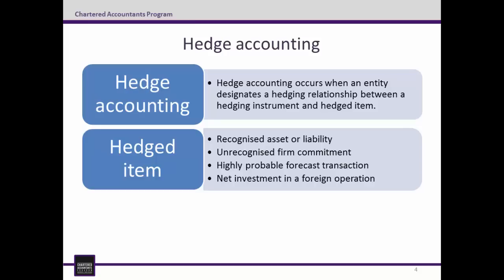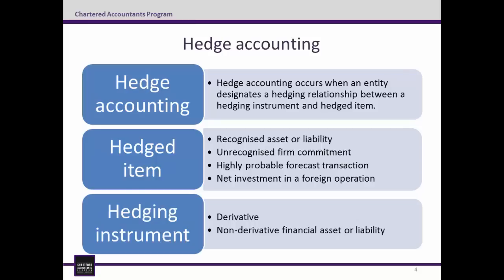An eligible hedging instrument is either a derivative with certain requirements, or a non-derivative financial asset or liability. There are three types of hedging relationships: fair value, cash flow, and a hedge of a net investment in a foreign operation. The first two are what we'll focus on here, whilst the third is not covered in this unit.